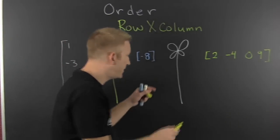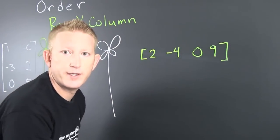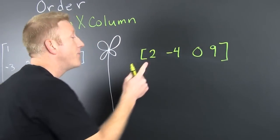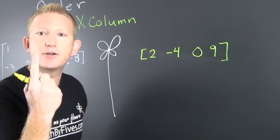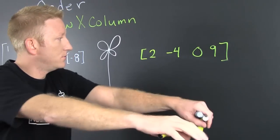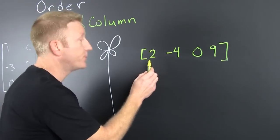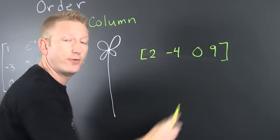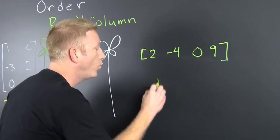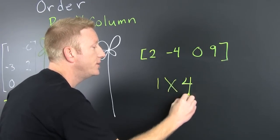Oh boy! But what about this one? How many rows do you see? There's only one row. How many columns? Well they're short, but there's one, two, three, four columns. So this is a one by four matrix.